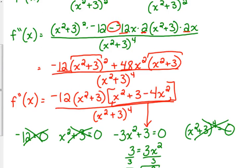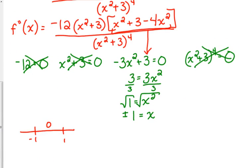Let's test x = 0, negative 2, and positive 2 — plugging these into the second derivative and checking the signs. For the second derivative at negative 2: negative 12 is negative, and when we square negative 2 we get 4, multiply by negative 3 gives negative 12, plus 3 is still a negative. The bottom is always positive, so we've got two negatives and two positives — that result is positive.